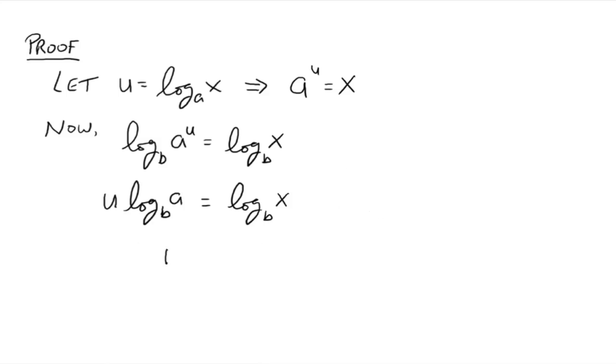All right, and so now if we isolate U, you get U to be the log base B of X divided by the log base B of A. And what was U? Well, U, we said, was log base A of X. So log base A of X is equal to log base B of X divided by log base B of A.